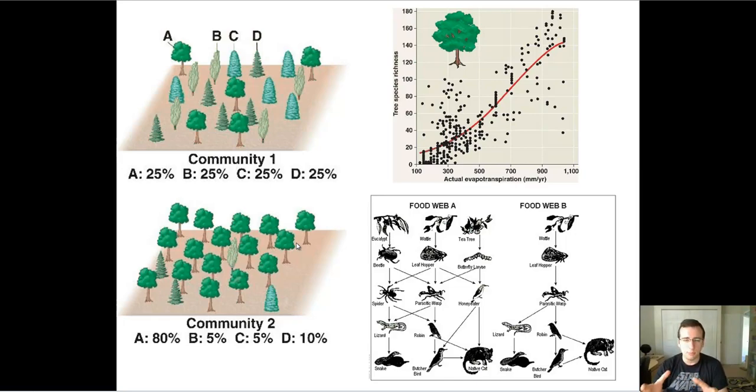Now, why is it important? Look at the top right here in this graph, where you can see that the more diversity, or the more types of species that exist in the ecosystem, the greater the amount of evapotranspiration in the ecosystem.